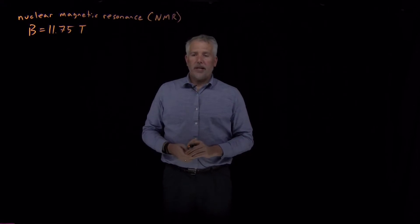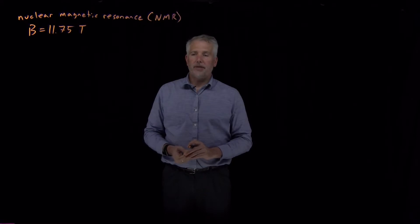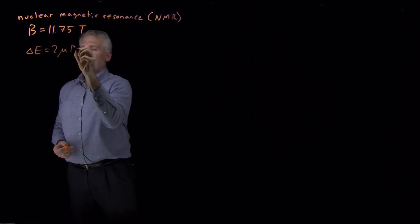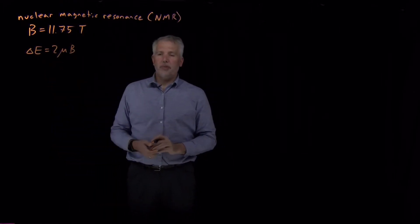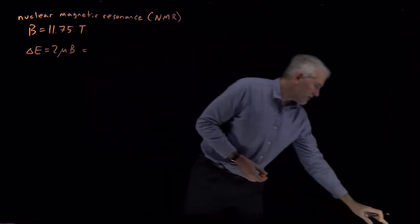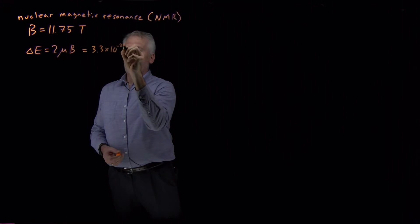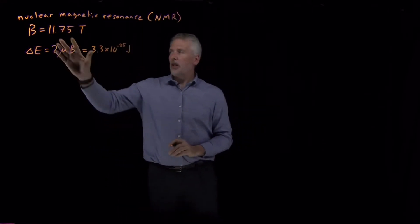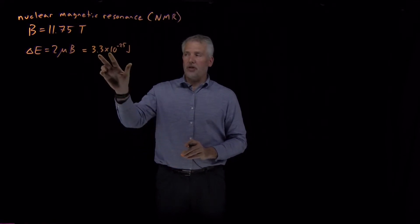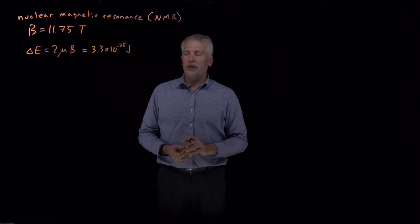Take a very large magnet with a magnetic field strength of 11.75 Tesla. For protons, the difference in energy between the spin-up and the spin-down states in this magnetic field will be about 3.3 times 10 to the minus 25th joules. This is about six orders of magnitude larger than the Earth's magnetic field — large enough that the energy difference is beginning to be comparable to kT, though still a few orders of magnitude less.